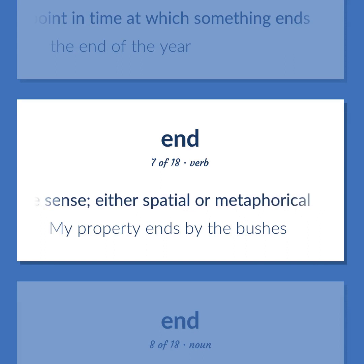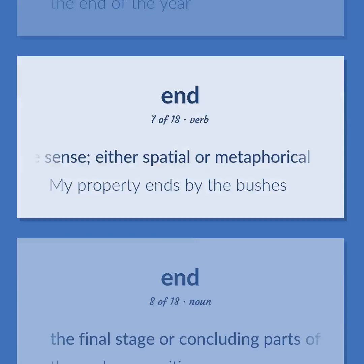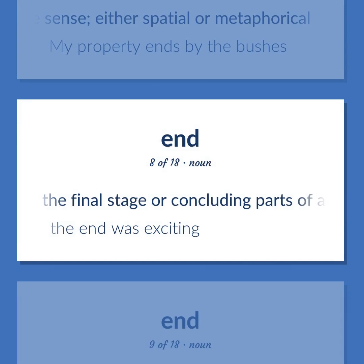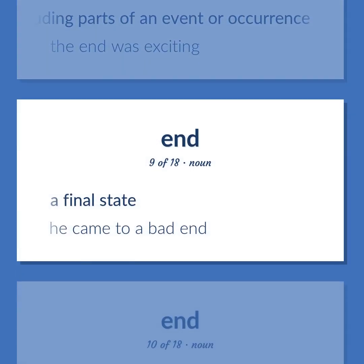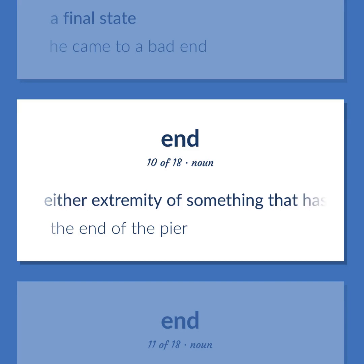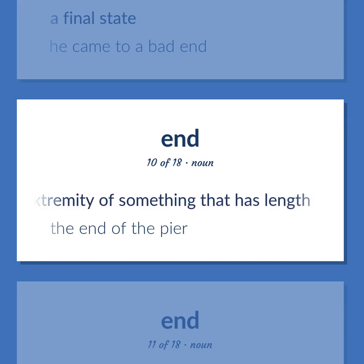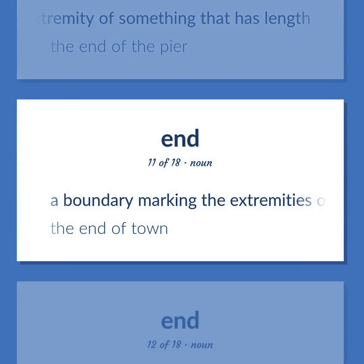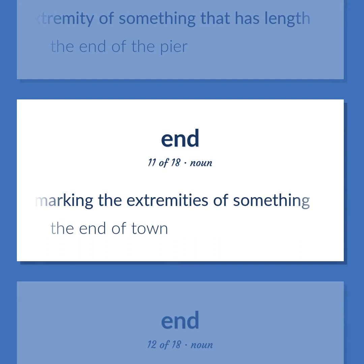My property ends by the bushes. The final stage or concluding parts of an event or occurrence — the end was exciting. A final state: he came to a bad end. Either extremity of something that has length — the end of the pier. A boundary marking the extremities of something — the end of town.